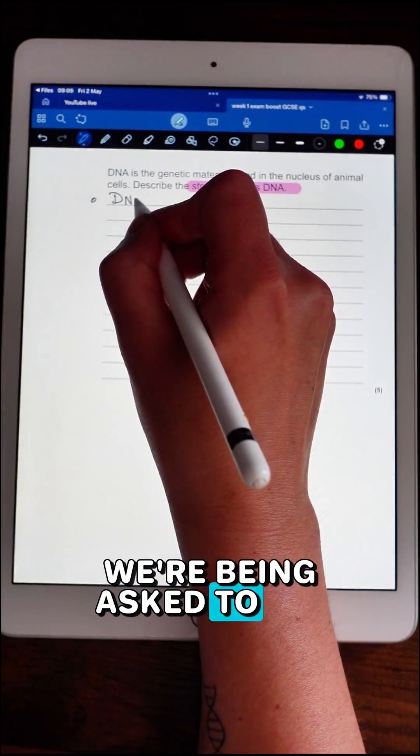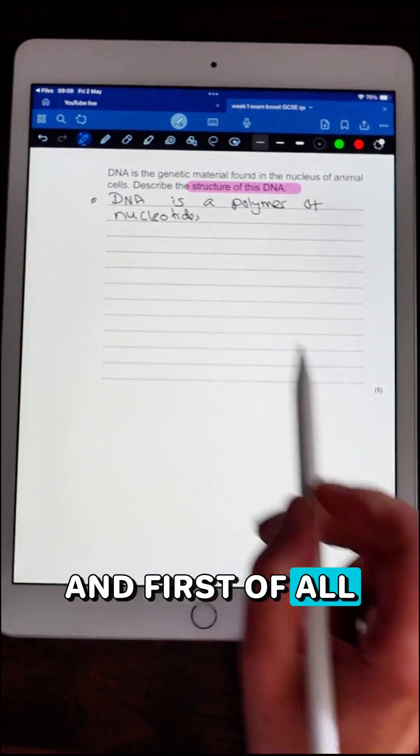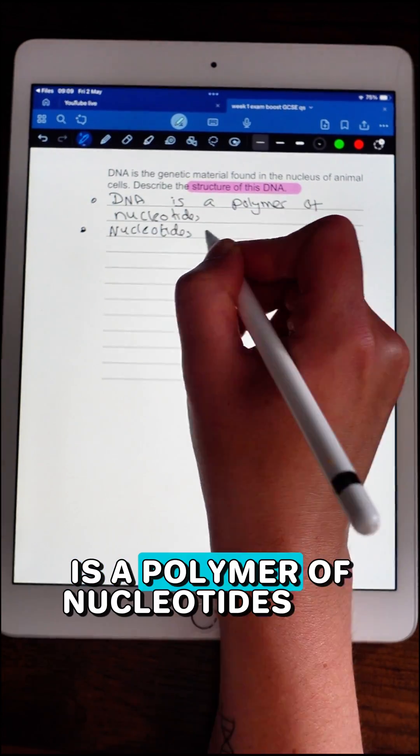In this question we're being asked to describe the structure of DNA. First of all, I say that DNA is a polymer of nucleotides.